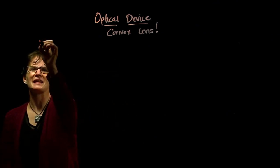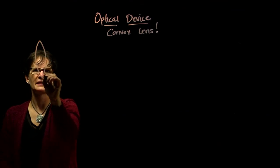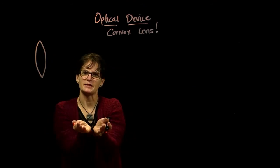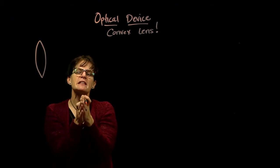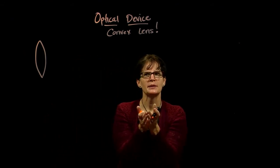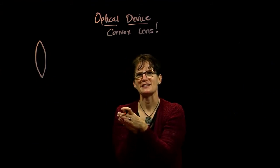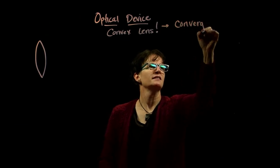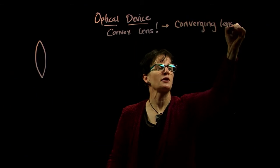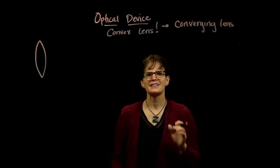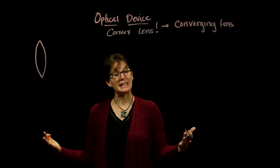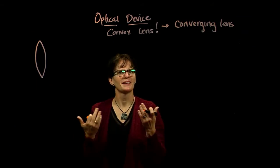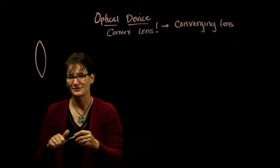A convex lens looks like a football — it has that shape. The edges of the lens bow outwards. That's the physical definition describing the actual shape. But there's also an operational definition for this optical device: it is a converging lens. This describes how it behaves. A convex lens converges light, meaning it brings the light to a single point — it brings the light rays towards each other.